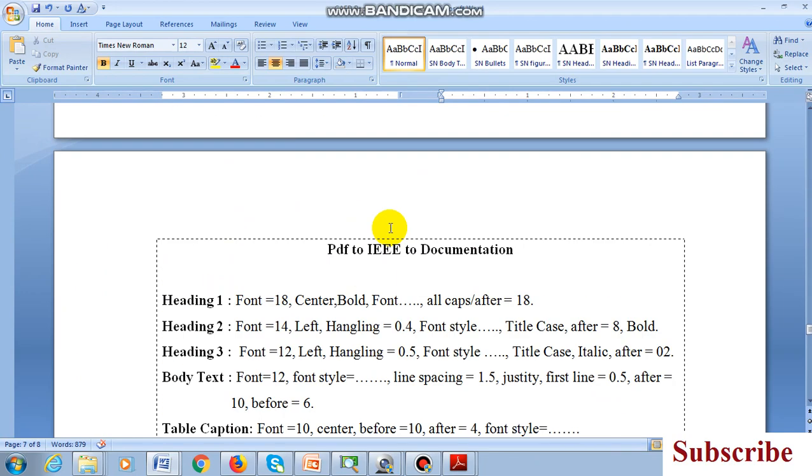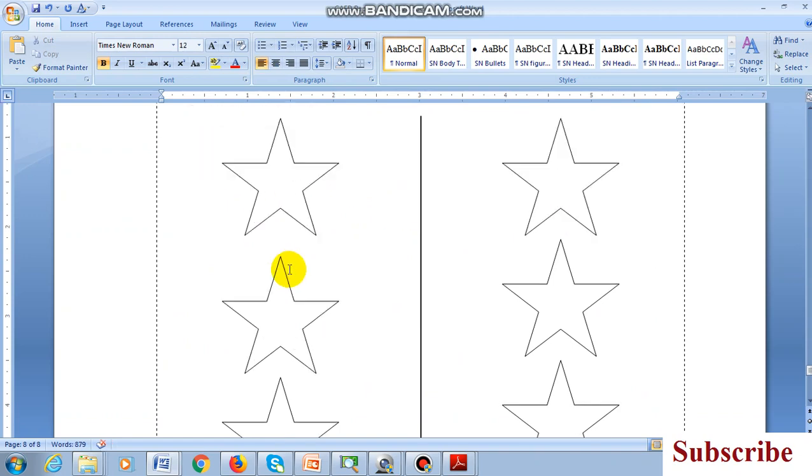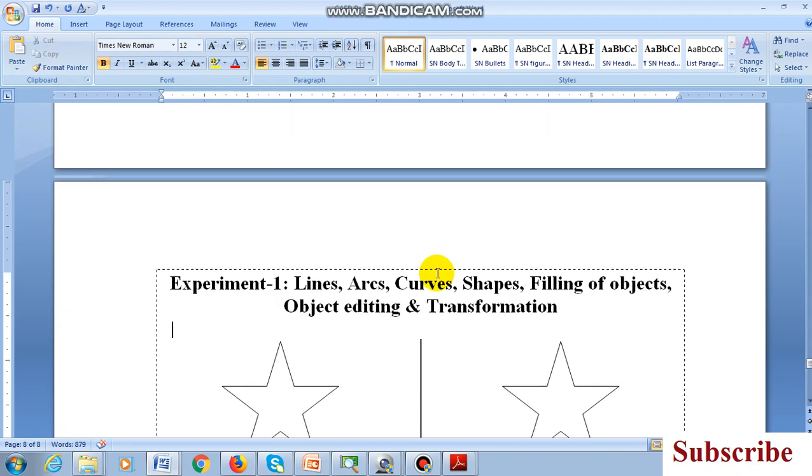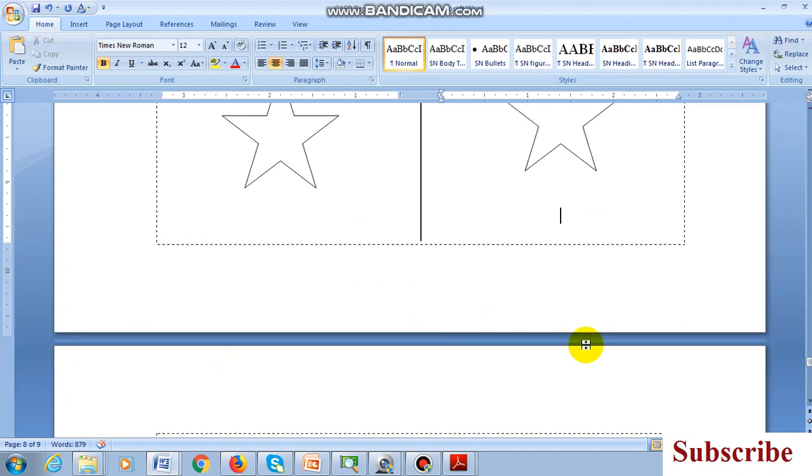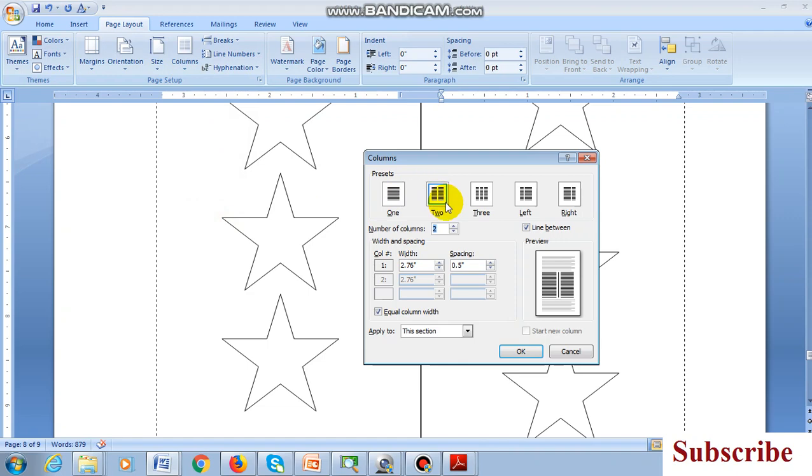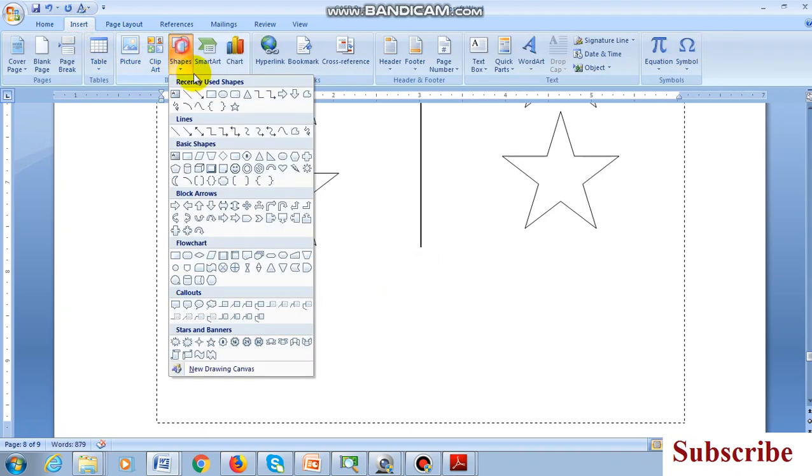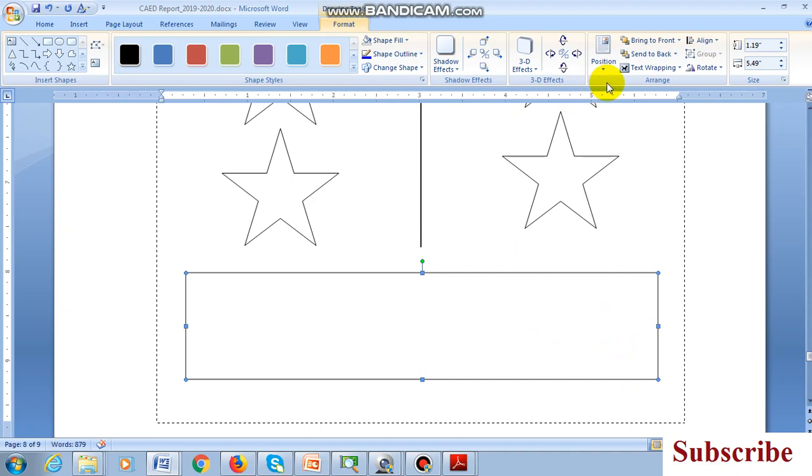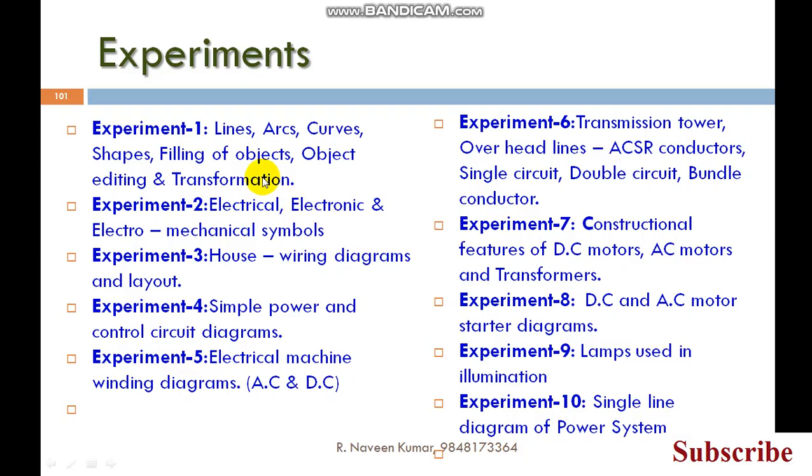Till the first pages it is a single column. When you come to the chapters or experiment number, the title should be in single column, then you make it as two columns. Wherever you want to rotate it, you can convert it into single column and dump the information. For example, if I want a lengthy diagram, you can insert it and make it inline with text. You dump all the experiments, one through ten, everything into two columns with in-between line. This is the figure caption.